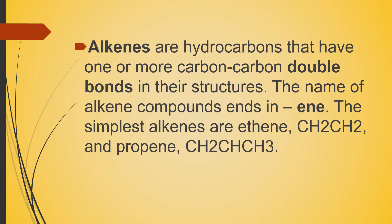Alkenes are hydrocarbons that have one or more carbon-carbon double bonds in their structures. The name of alkene compounds ends in -ene. The simplest alkenes are ethene and propene.